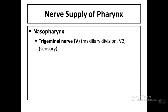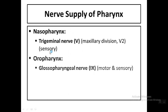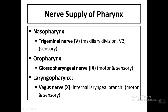The nerve supply of the pharynx involves three cranial nerves. The nasopharynx is supplied by the trigeminal nerve, specifically the maxillary division (V2), for sensory function. The oropharynx is supplied by the glossopharyngeal nerve (CN IX), which is motor to the stylopharyngeus muscle and sensory to the oropharynx and posterior one-third of the tongue. The laryngopharynx is supplied by the vagus nerve via the internal laryngeal branch, which is both motor to pharyngeal muscles and sensory to the laryngopharynx.